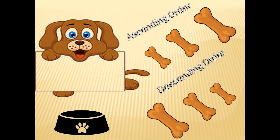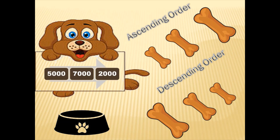Here is Mojo, and Mojo has got some numbers which we have to arrange in ascending and descending order. So let's get started. The numbers are 5000, 7000, and 2000. In ascending order, the smallest number comes first, so we have 2000, then 5000, and then 7000. In descending order, the biggest number comes first, so we put 7000 first, followed by 5000, and then 2000.